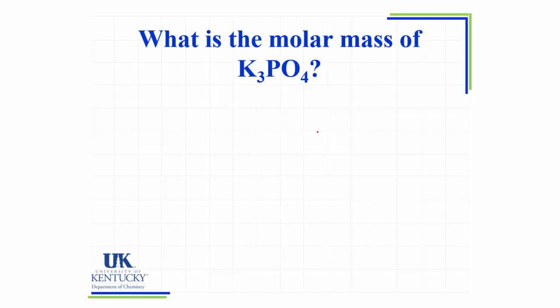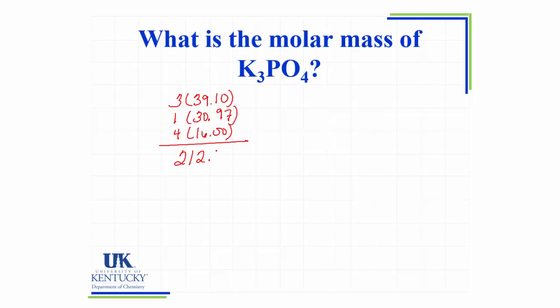Now we know the formula for potassium phosphate, but we need to find its molar mass. So I'm going to take 3 times the mass of potassium, which is 39.10, plus 1 times the mass of phosphorus, which is 30.97, and then 4 times the mass of the oxygens. When I add that up together, I find that I have 212.27 grams per mole of potassium phosphate.